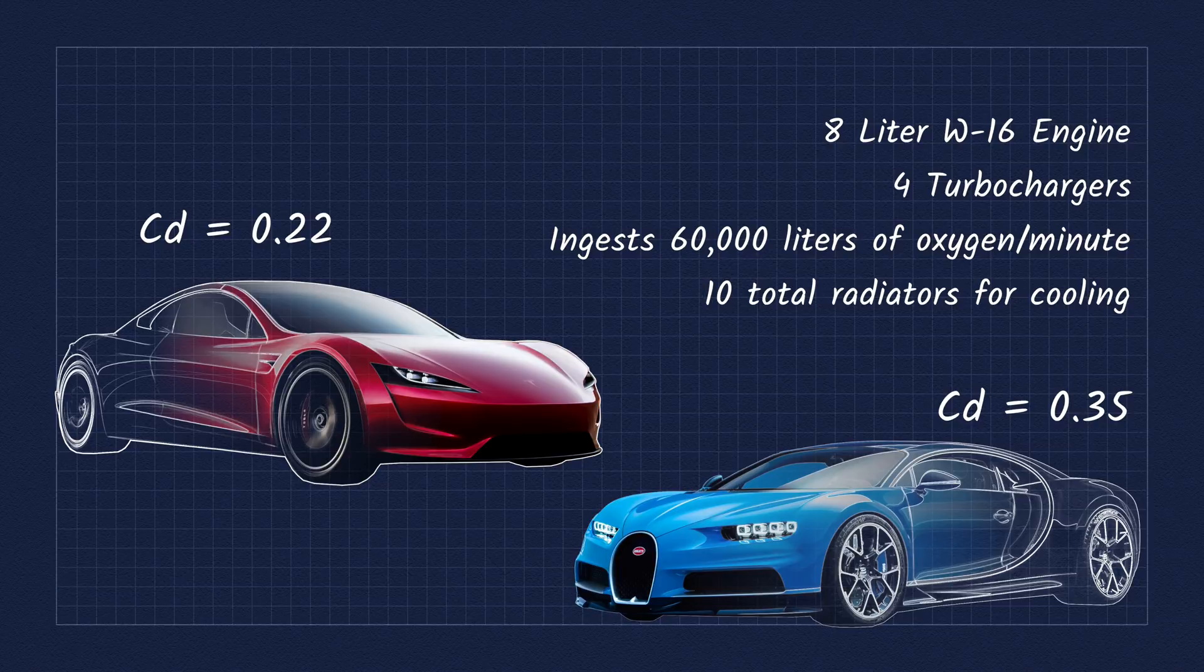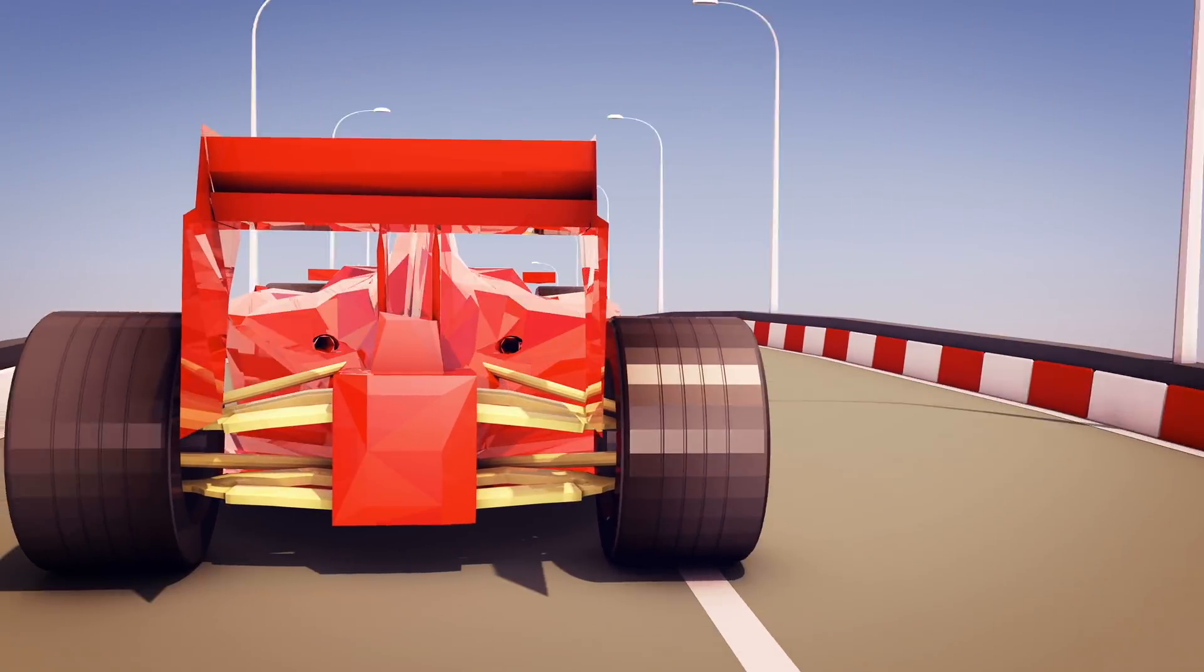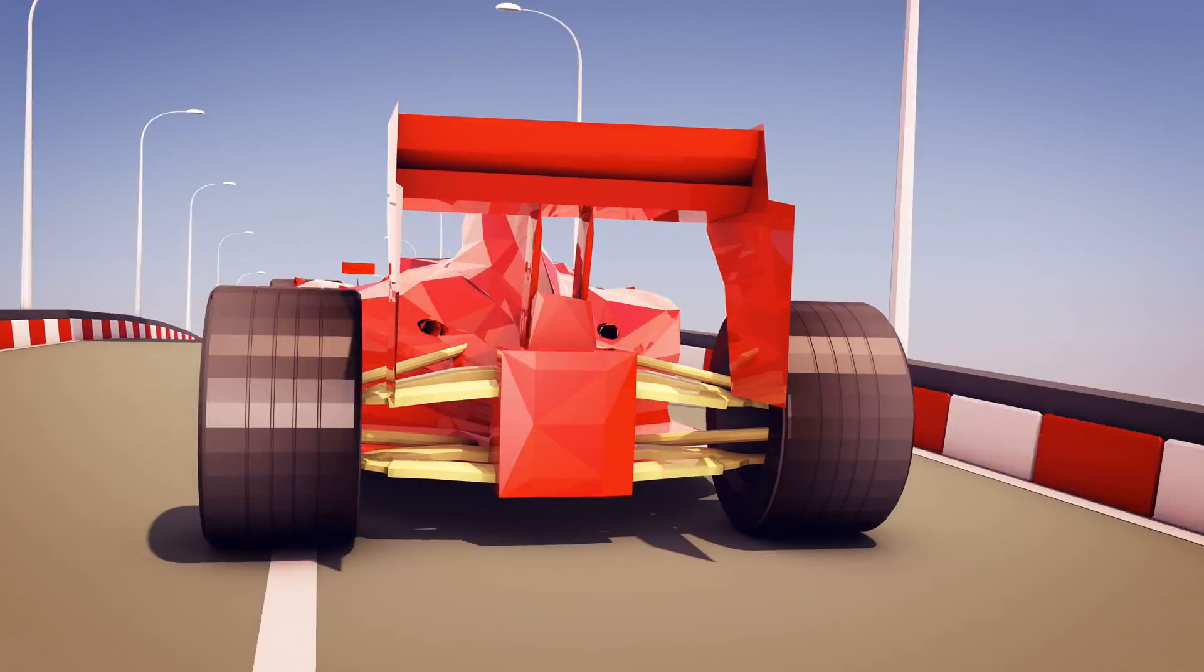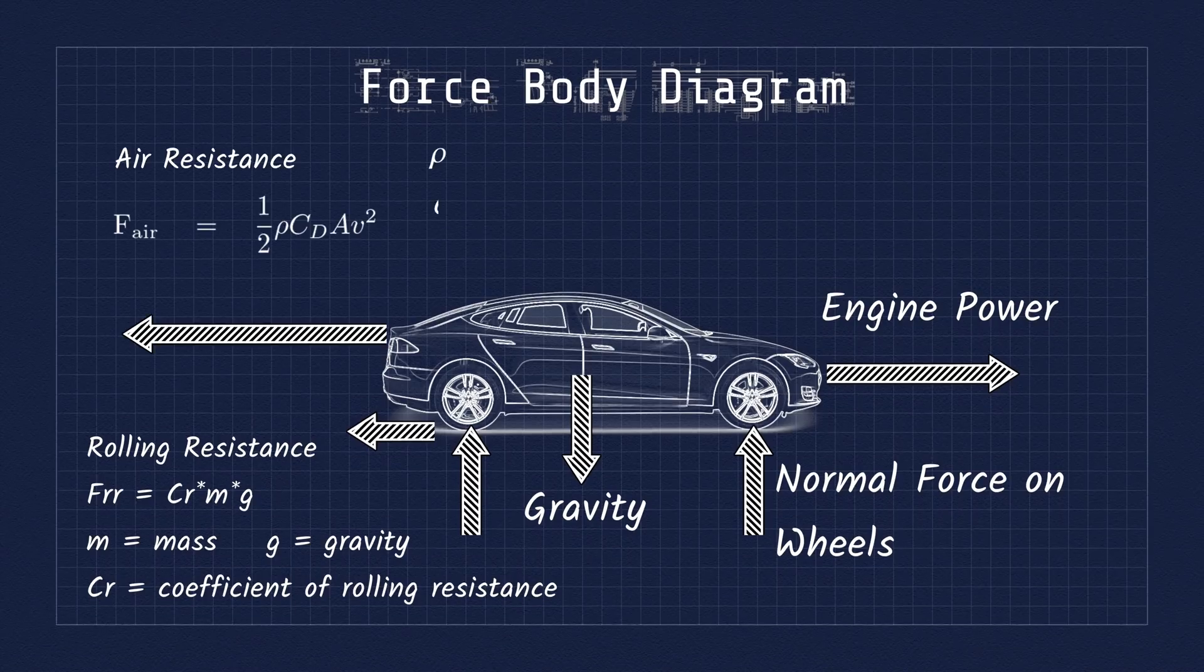Supercars aren't all about the lowest drag coefficients though, because they need special aero spoilers and body panels to provide enough downforce to offset the lifting forces at high speeds. The car's frontal area, drag coefficient, and air density factor into the air resistance.